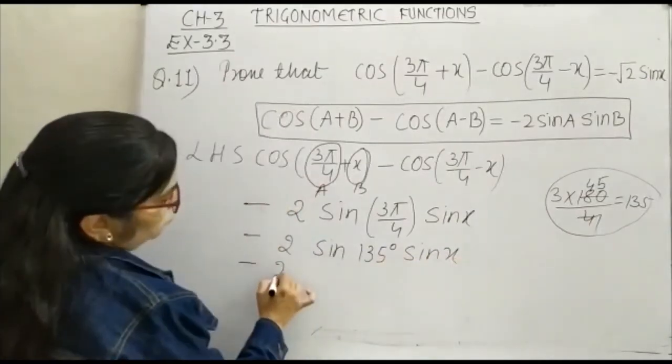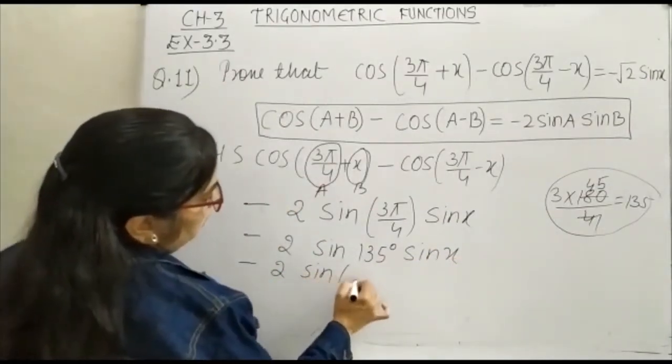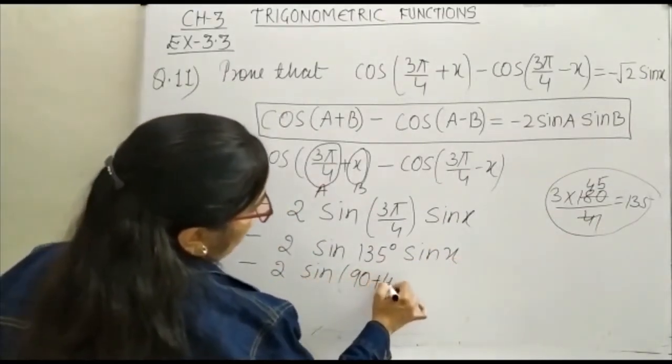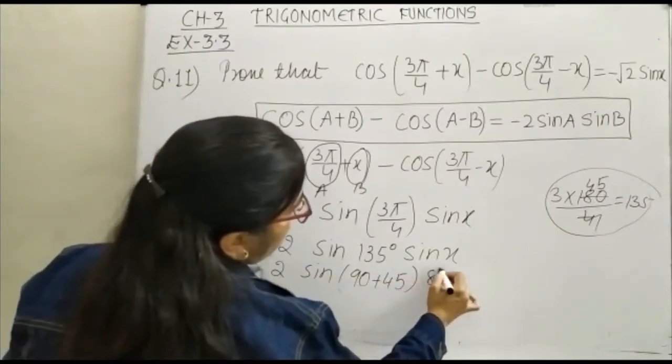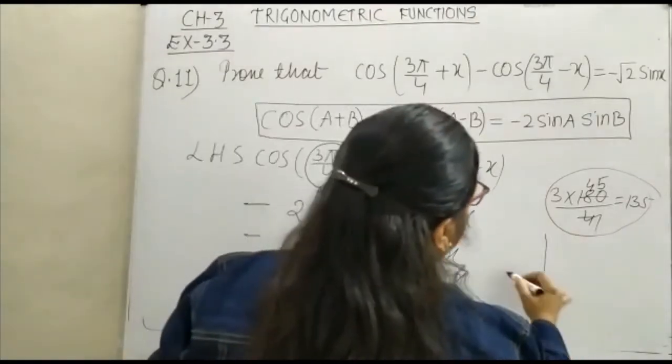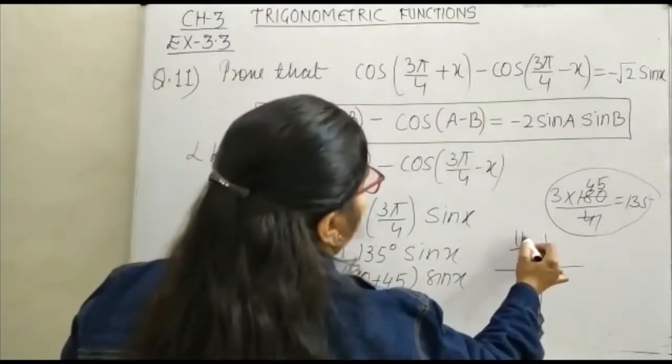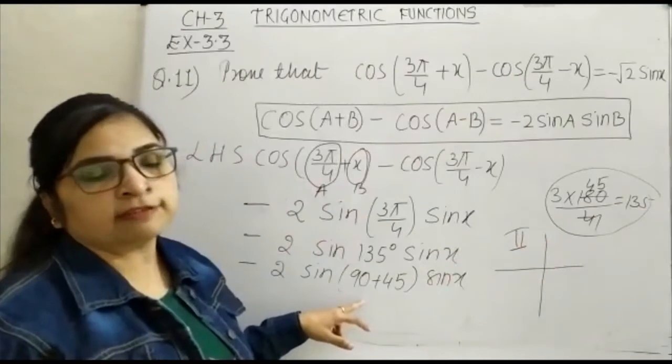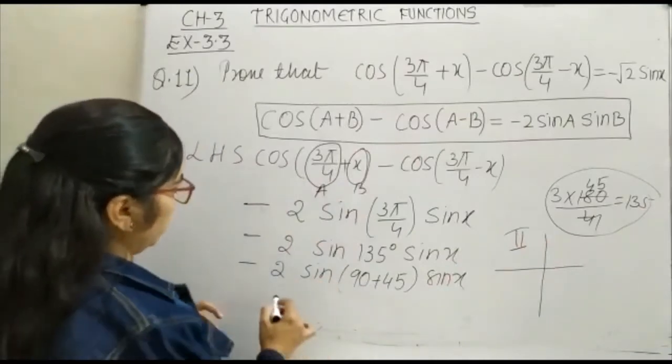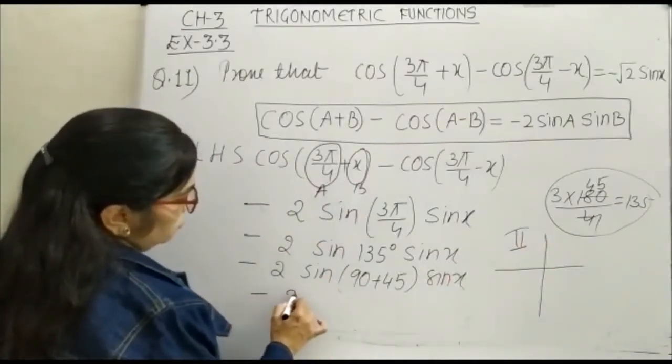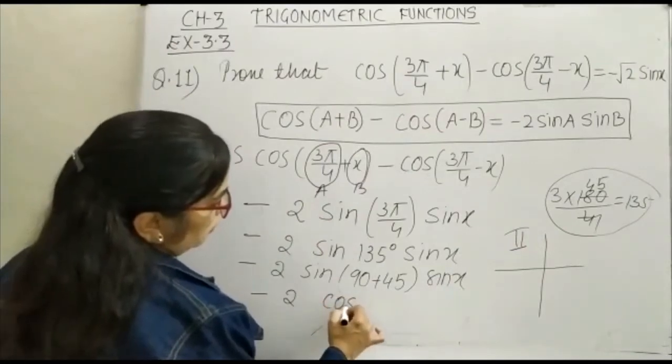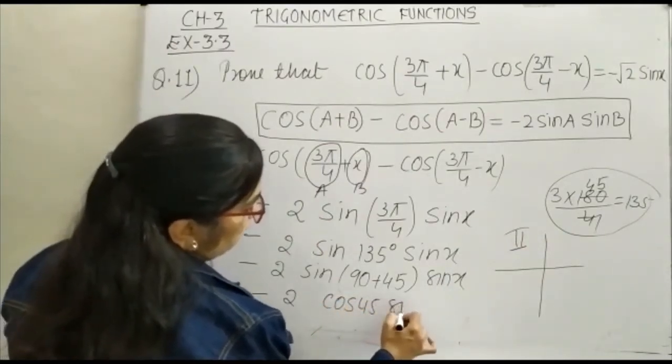Minus 2 sin(90 + 45) and here it is sin x. Just see here 90 plus 45 lies in second quadrant, 90 into 1, this is the odd multiple, so this will be your minus 2 cos 45 sin x.